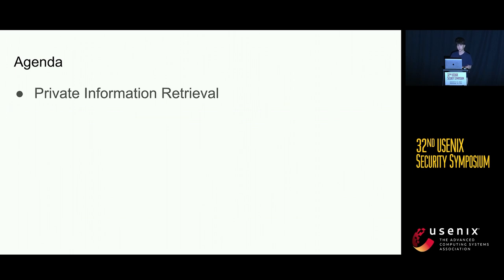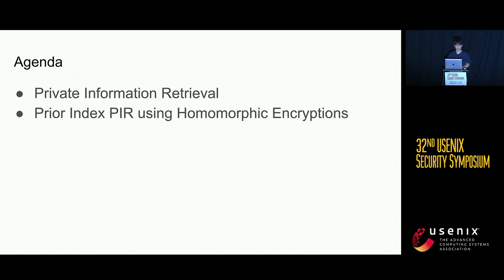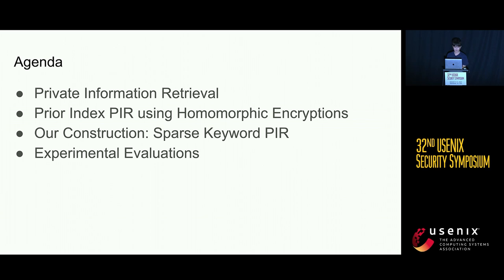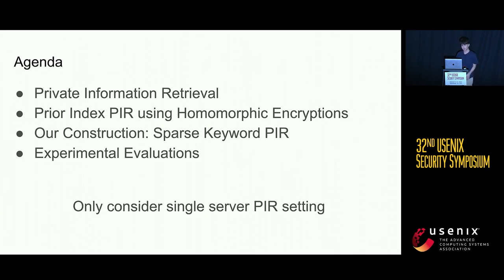The agenda for the talk will be roughly divided into four parts. The first part will briefly go over what private information retrieval is. The second part will go over some prior index PIR schemes using homomorphic encryption. The third part will present our main construction called sparse keyword PIR. And we'll go over some experimental evaluations. In our work, we only consider a single-server PIR setting.